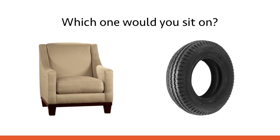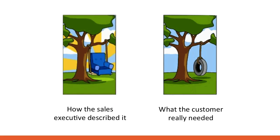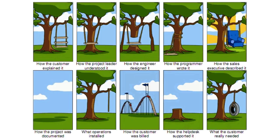Here's a silly question: which one would you sit on? Everybody would agree the chair on the left looks very comfortable. But when you put it in the context of a tree swing, it's pretty obvious that seating comfort isn't the main feature — you probably want a tire, and that does the job fine. This is part of a comic strip about project management, and my favorite part is the bottom left: 'the house project was documented.' We see this problem all the time with every project.